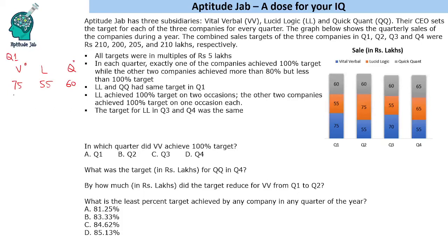Let us assume that VV achieves 100% target. The total target is 210, so the remaining for LL and QQ is 135. Since these two have the same target, dividing by 2 gives 67.5. This refutes the condition that all targets are in multiples of 5 lakhs. So this means it is QQ that achieved 100% target in Q1.